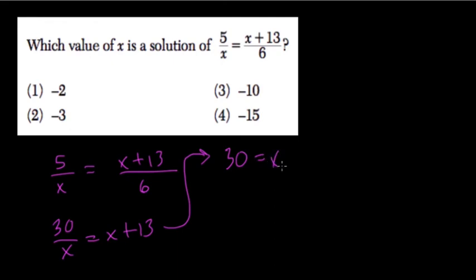On the right-hand side, we have x times x plus 13. So now we'll distribute the x. We get x squared plus 13x equals 30.